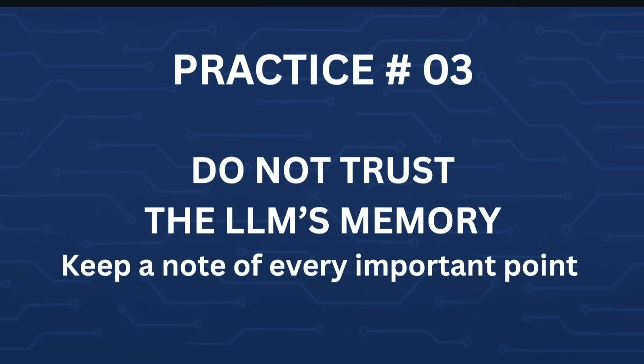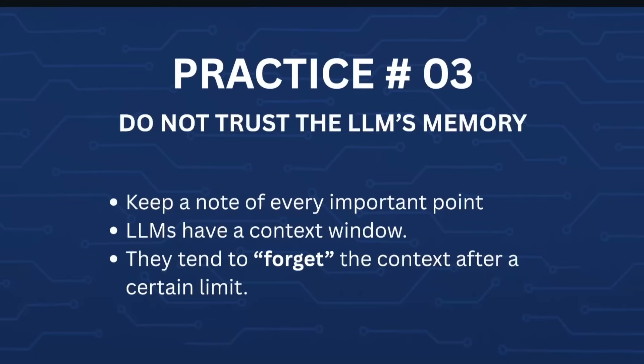This brings us to must-do practice number three: do not trust the LLM's memory. Keep note of every important point, because LLMs have a context window — they have limited memory and tend to forget context after their context limit is reached. It is very important to keep all important information during both your planning and development phases. You must save everything in your own documents so that if the LLM loses context, you can provide the exact information back to it. This will save you a lot of time if the LLM forgets your previous instructions or the agreed-upon development plan.